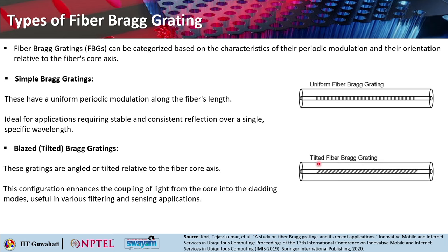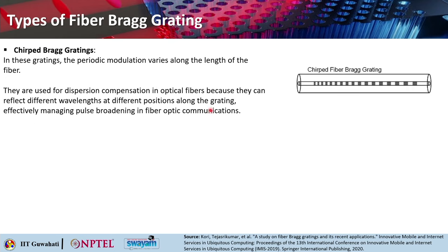The next type is tilted or blazed fiber Bragg grating, where the gratings are angled or tilted with respect to the fiber core axis. This configuration enhances coupling of light from the core into cladding modes, making them useful in filtering or sensing applications. Then there is the chirped Bragg grating, where the periodic modulation varies along the length of the fiber. These are used for dispersion compensation because they can reflect different wavelengths at different positions along the grating, managing pulse broadening in fiber optic communication.